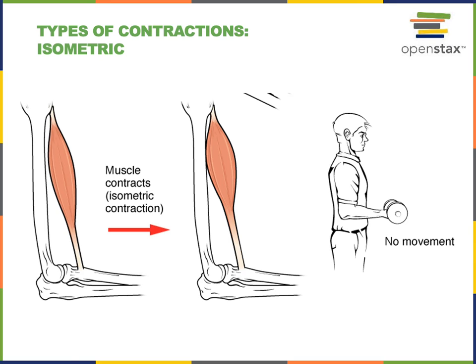The example shown in the illustration is the biceps brachii muscle contracting to stabilize the position of the elbow, or humeral ulnar joint, in order to stabilize the load of a dumbbell. There is no movement produced, but the biceps brachii is producing muscle tension equal to the load.